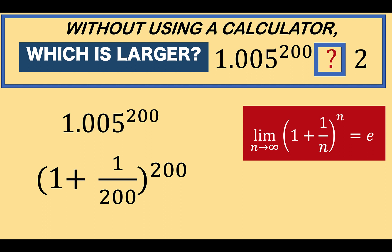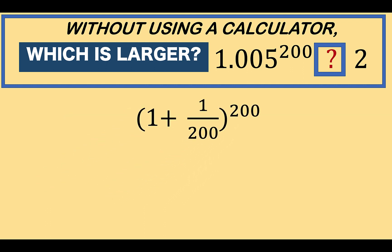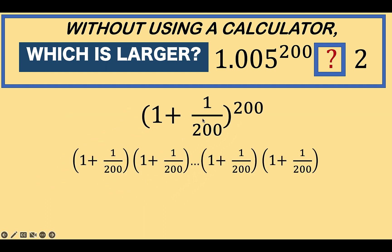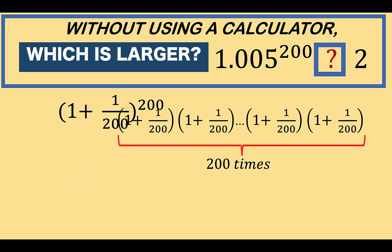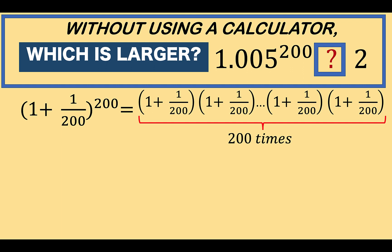So let's go to another approach. What we are going to do is just expand this given expression into these factors. Since the exponent is 200, we know that we are going to multiply the base 200 times. So this is our expansion of 1.005 raised to 200.